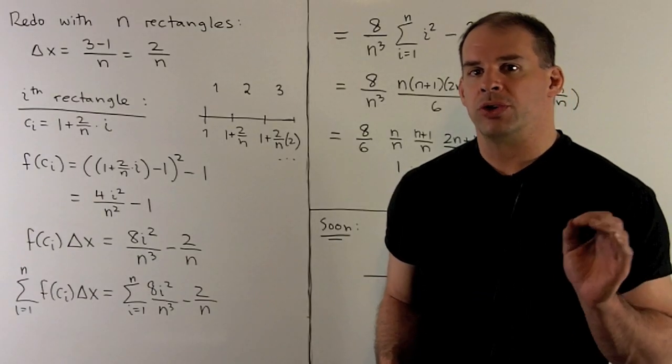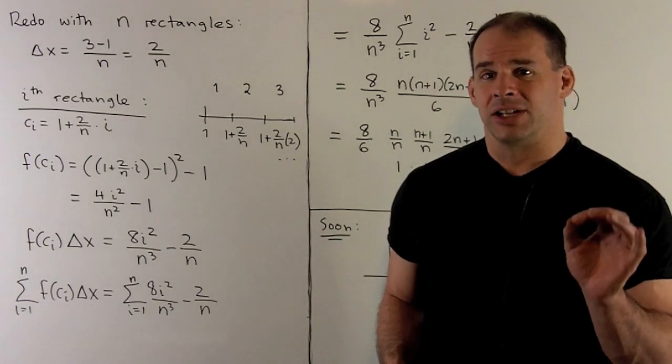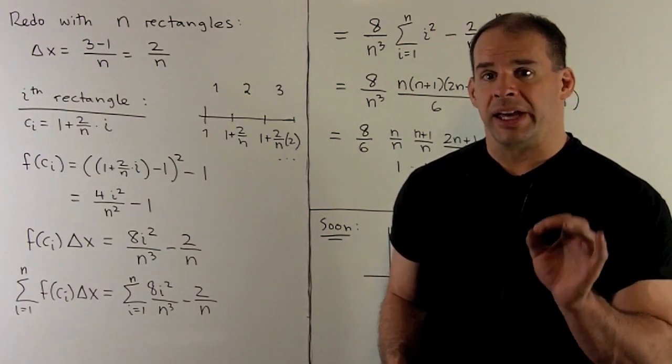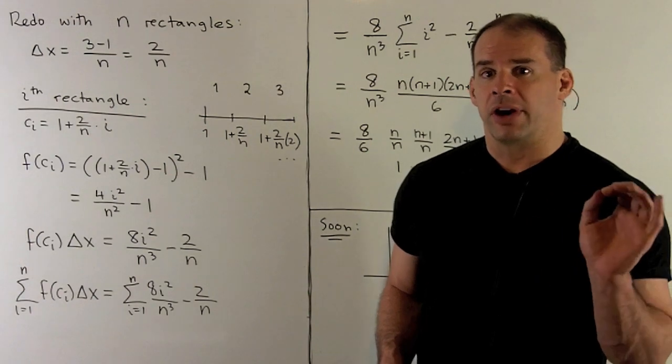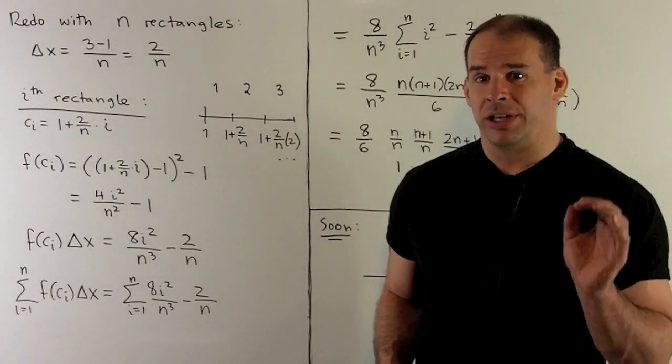Now, let's redo the problem with n rectangles. First, we'll recalculate delta x, the length of each base. So, the length of our interval is going to be 2, 3 minus 1. We divide by n, we get 2 over n.